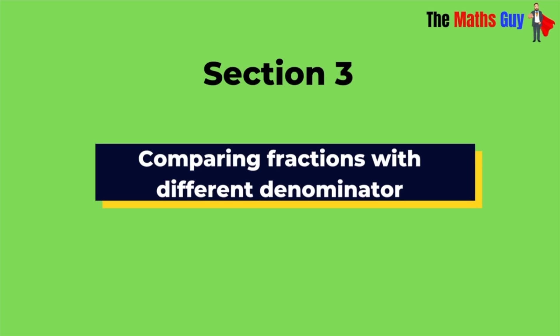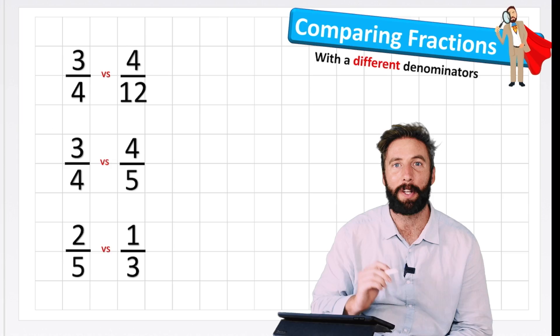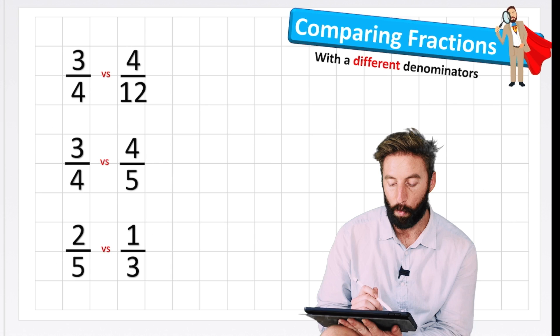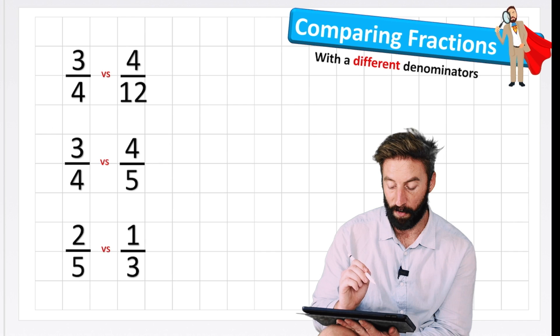Welcome back to The Maths Guy everyone. Today's lesson is comparing fractions with different denominators. Let's start. We're going to be working on these three questions: three quarters versus four twelfths, three quarters versus four fifths, and two fifths versus one third.